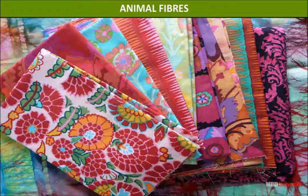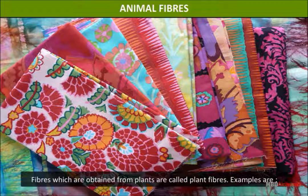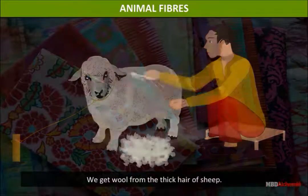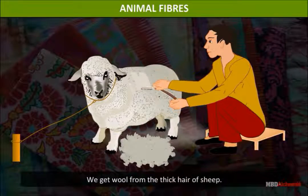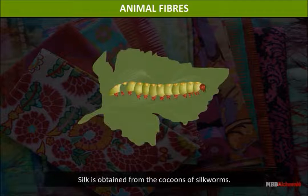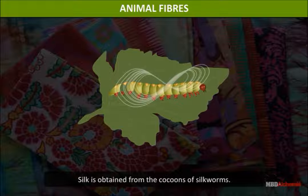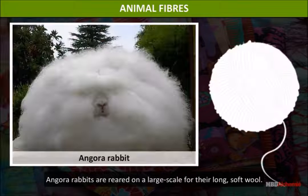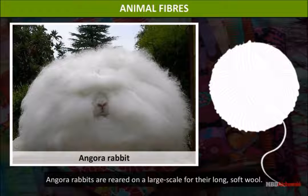Animal fibers: Fibers obtained from animals are called animal fibers. Examples are: wool, which we get from the thick hair of sheep; and silk, which is obtained from the cocoons of silkworms. Angora rabbits are reared on a large scale for their long, soft wool.